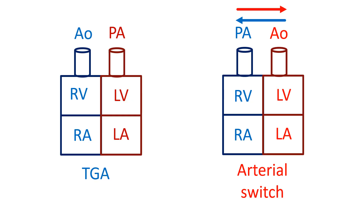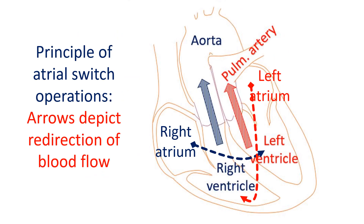In the ideal surgery for transposition of great arteries, known as the arterial switch operation, the abnormally positioned aorta and pulmonary artery are switched back to their expected positions. Coronary arteries are also transposed. The arterial switch operation was described in 1975. Prior to that, transposition of great arteries was treated by switching the systemic and pulmonary venous return to the opposite side to functionally correct the transposition.